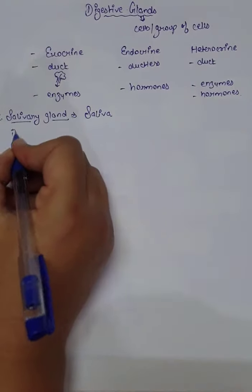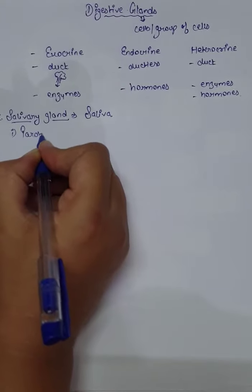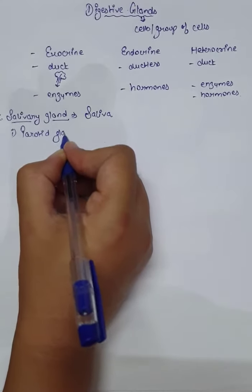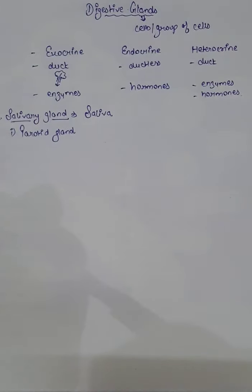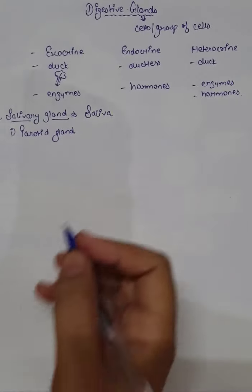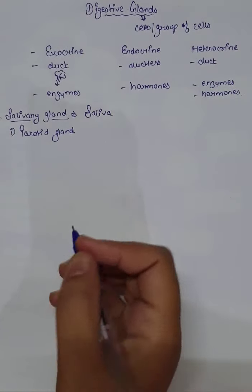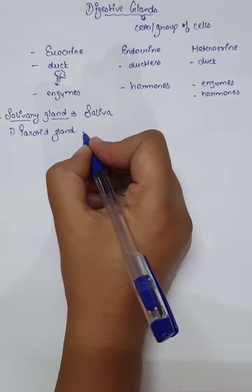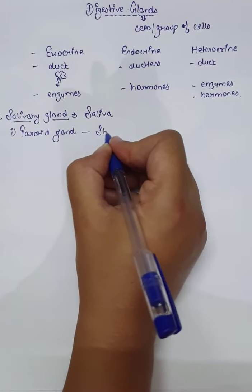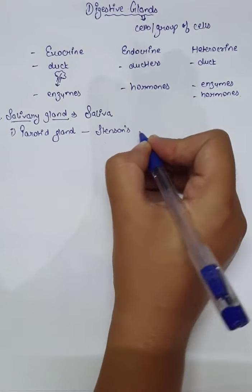The first Salivary gland is the Parotid gland. Among all the Salivary glands, this is the largest gland and it is present near the ear. Its opening is on the upper second molar, near the upper jaw. The duct of the Parotid gland is known as Stenson's duct.